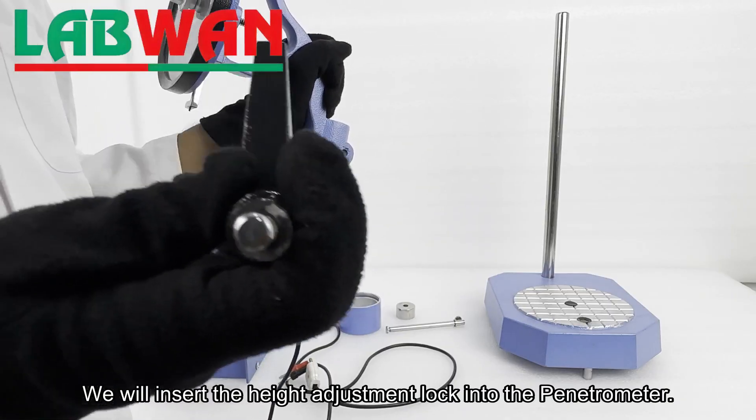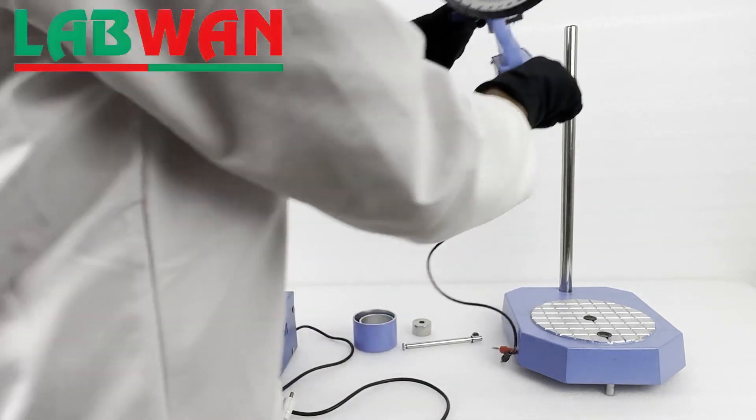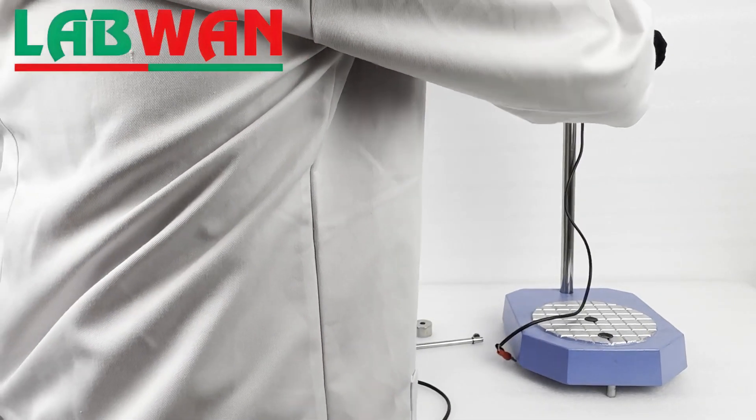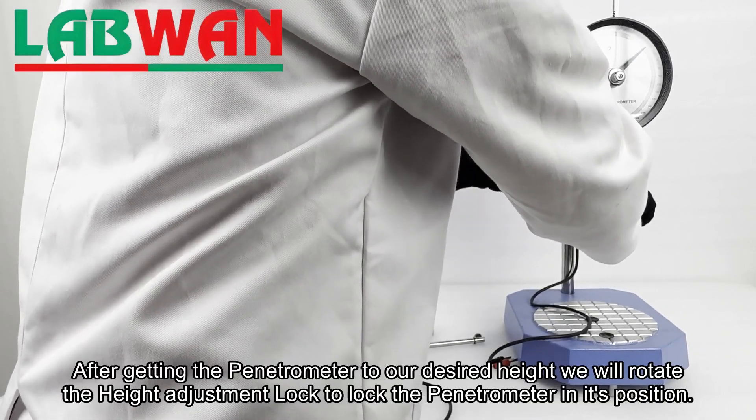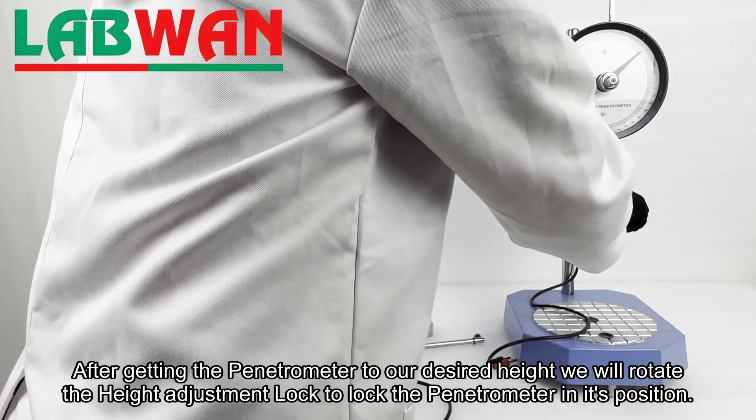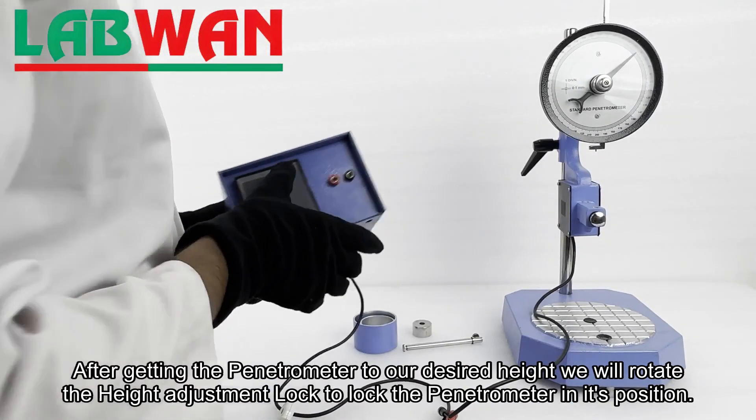We will insert the height adjustment lock into the penetrometer. Then we will attach the penetrometer to the stand. After getting the penetrometer to our desired height, we will rotate the height adjustment lock to lock the penetrometer in its position.